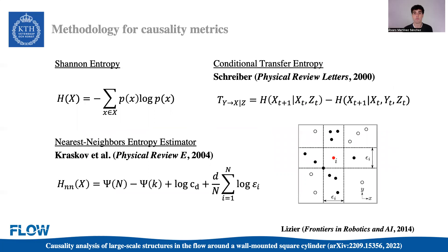We will now explain the methodology employed for obtaining these causal interactions. We use the framework provided by information theory to quantify causality among different temporal signals. The central quantity for causal assessment is the Shannon entropy, expressed as a function of the probability density function of a given random discrete variable x. This quantity can be thought of as a measure of the amount of uncertainty present in the variable. We then use the principle of conditional transfer entropy to estimate the amount of uncertainty on a different variable y remaining after having observed variable x, and we define causality from x to y as the decreasing uncertainty of y knowing the past state of x.